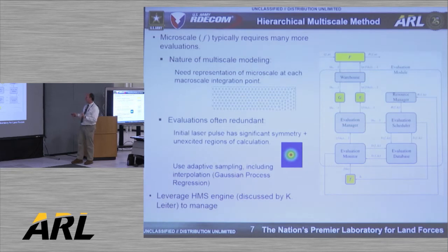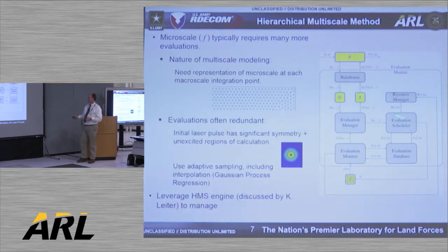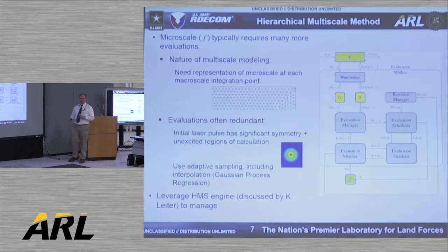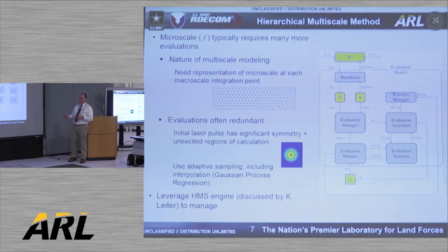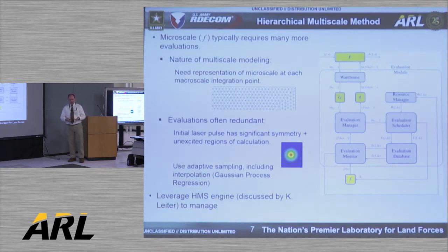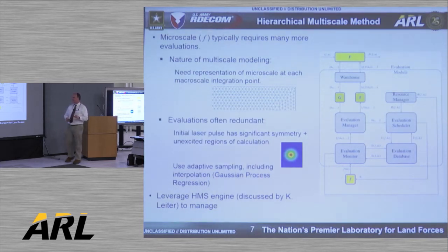Ken went over how this whole hierarchical multi-scale method works. The basic idea is: we have a macroscale, a microscale, and a lot of stuff in between that hopefully reduces total computation. If you look at a laser pulse passing through our semiconductor, we represent it with a continuum model — in this case a finite element mesh — and we want to know the microstate at every point on this mesh. That can be a lot of calculation, but there's a lot of symmetry we can exploit. Using adaptive sampling and creating databases through our machine learning approach, we should be able to reduce computational cost significantly.